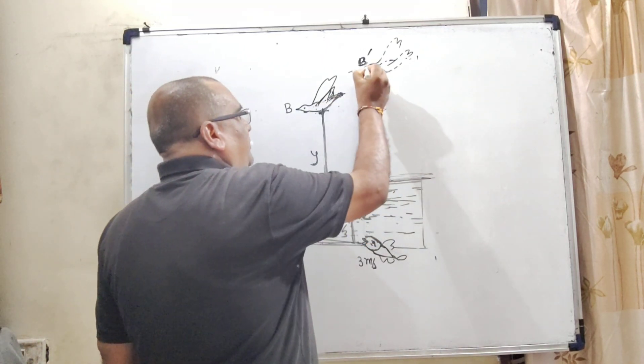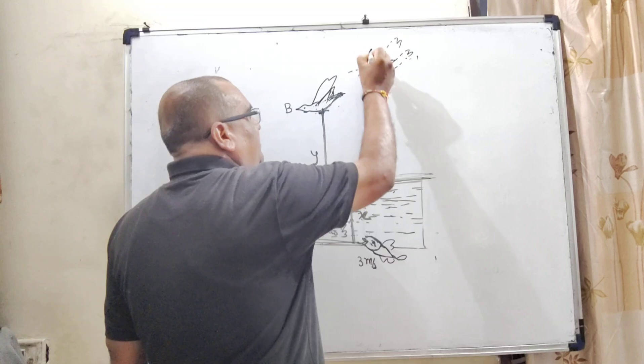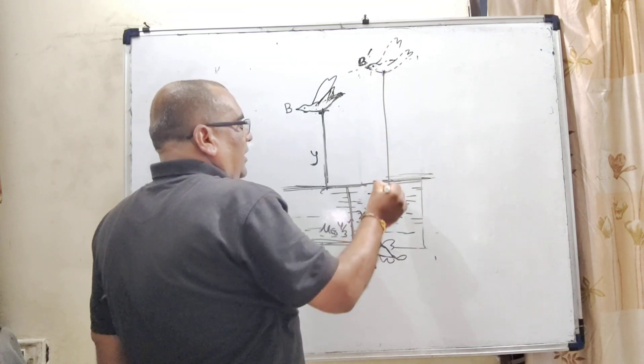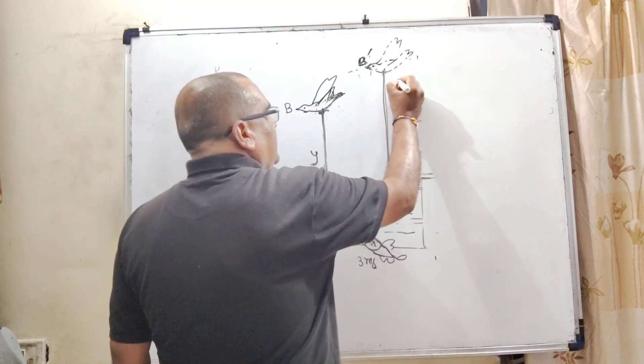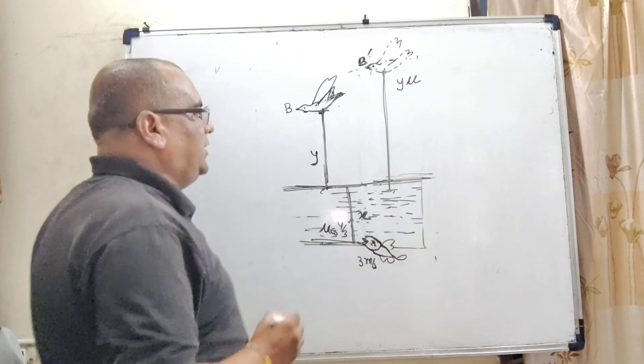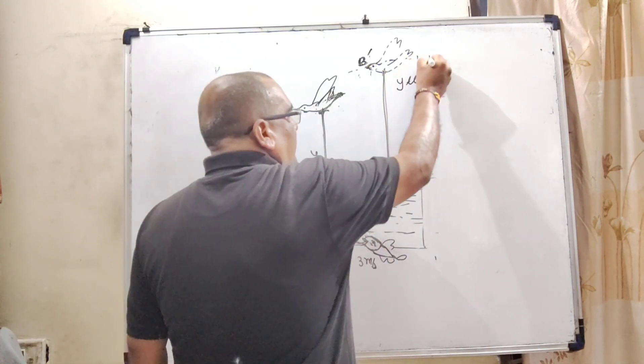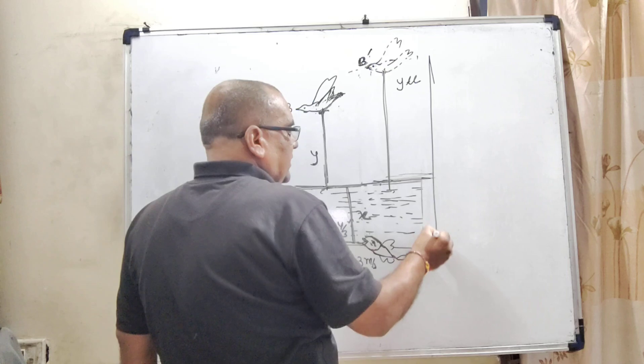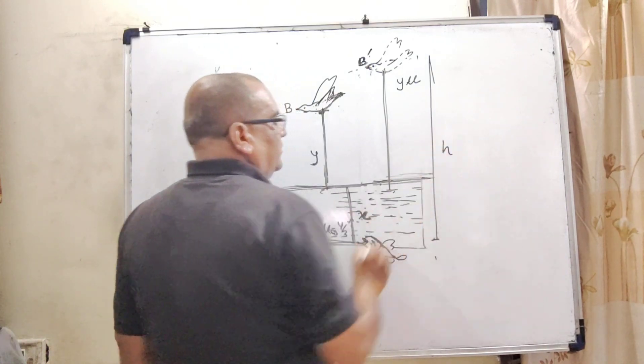So, here, let us consider the mu, this position, appearing position, that is B' of this bird. And here, that is y/mu. And total distance from the fish and this apparent height, that is considered, that is h.